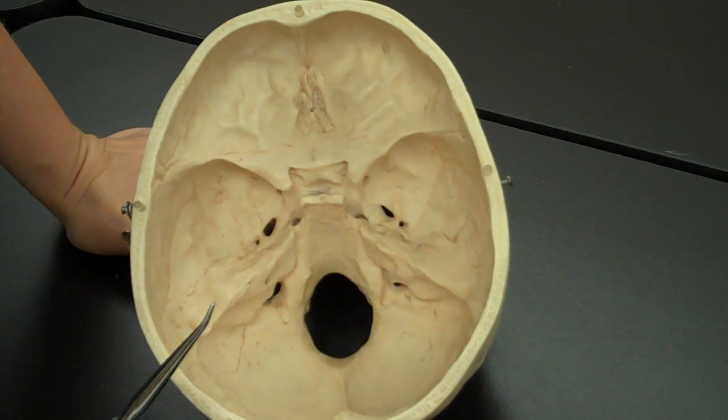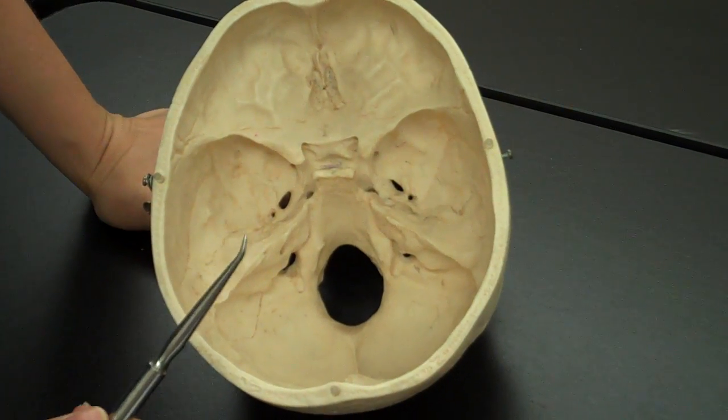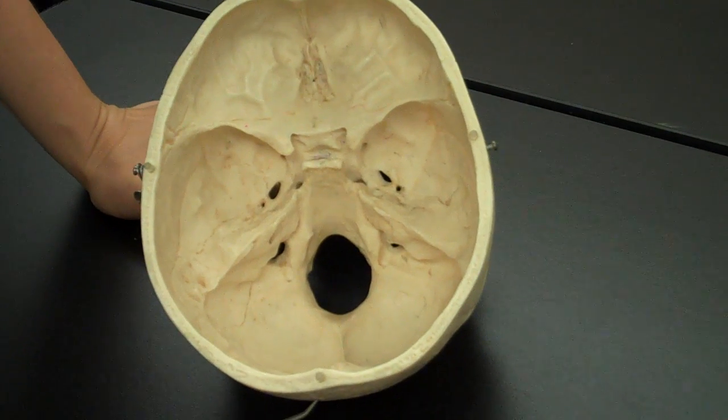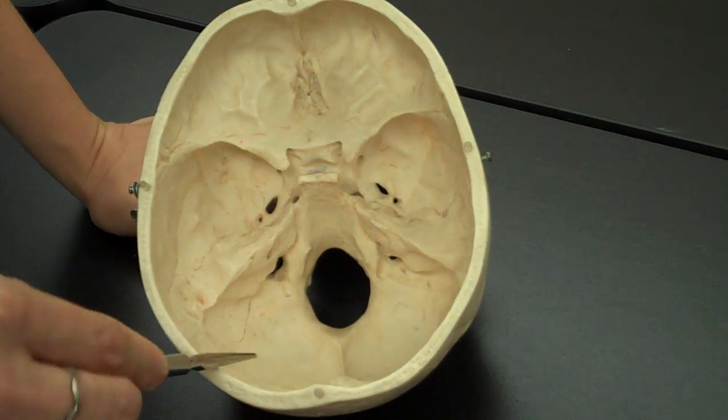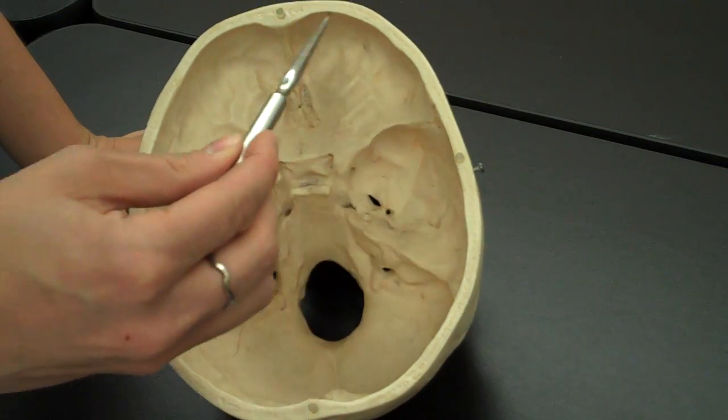I'm going to point out the large bones and then do all of the individual stuff. The same bones that you see on the outside are what you see on the inside. This right here would be the occipital bone. This right here then would be the frontal bone.